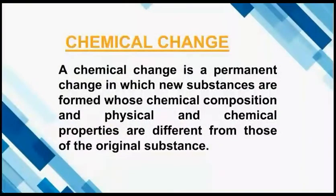Now, let's learn about chemical change. A chemical change is a permanent change in which new substances are formed whose chemical composition and physical and chemical properties are different from those of the original substance. In a chemical change, the original substance gives rise to one or more new substances with entirely different compositions and properties compared to those of the original substance.